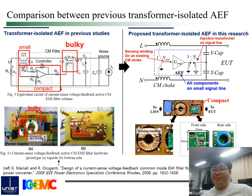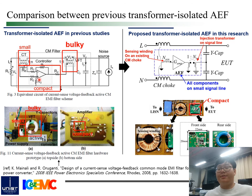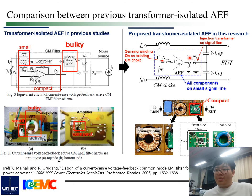There have been other papers on transformer isolated active EMI filters. However, the additional current transformer CT is required on power lines, and injection transformers are also located on power lines, so the total size of AEF significantly increases depending on the current rating of the EUT. However, in the proposed AEF structure, only a sensing winding is used to sense the common mode current by taking the small magnetic flux inside the existing common mode choke. Also, the injection transformer is not on power lines, and the high operating current is blocked by the existing Y capacitor. Therefore, all components inside the proposed AEF can be implemented in a compact package regardless of the EUT current rating.